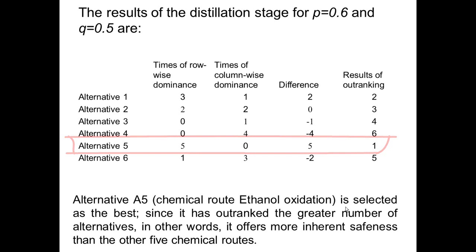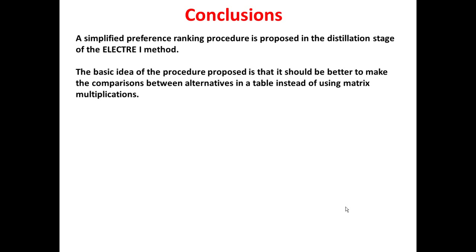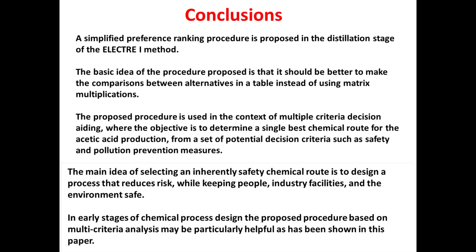We reach the following conclusions: A simplified preference ranking procedure is proposed in the distillation stage. The basic idea of the procedure proposed is that it should be better to make the comparison between alternatives in a table instead of using matrix multiplication. The proposed procedure is used in the context of multi-criteria decision analysis. The main idea of selecting an inherently safe chemical route is to design a process that reduces risk while keeping people, industry facilities, and the environment safe. In early stages of chemical process design, the proposed procedure based on multi-criteria analysis may be particularly helpful, as has been shown in this presentation.